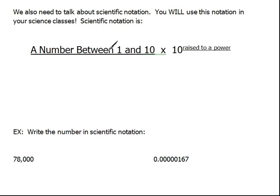Now, scientific notation is a number between 1 and 10 times 10 raised to a power. So if you were to see something like this, 2.56 times 10 to the 12th power, this is beautiful scientific notation.